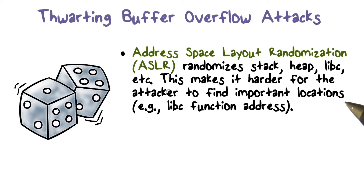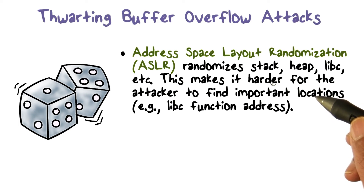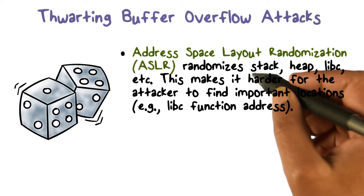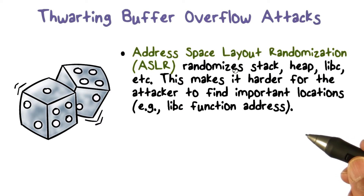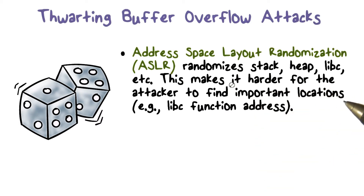The attacker has to actually guess where key information is. So if I wanted to do a return-to-libc attack, I had to know where the library is, where a certain function may be. I know the address of that function, and I can use that as I overflow the return address field in the stack frame. What ASLR does is make it hard, because of the randomization, for that hacker to find these important locations — the address of the information that hacker is interested in is not known.